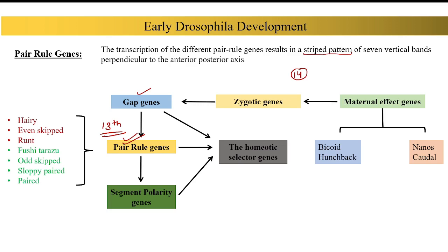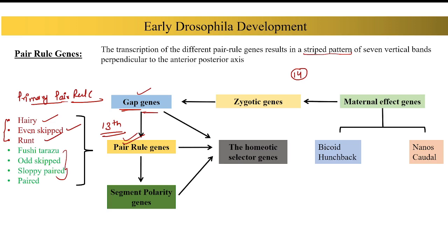We divide the pair rule genes into two categories. One is the primary category shown in red, and the other is the secondary category shown in green. The primary pair rule genes are the ones whose expression we see first — these are activated by the gap gene gradients. After the gap gene gradients are established, the primary pair rule genes start transcription, and their expression is seen first before the secondary pair rule genes.